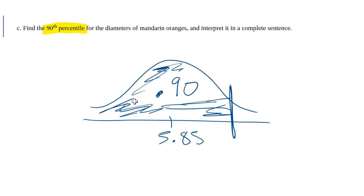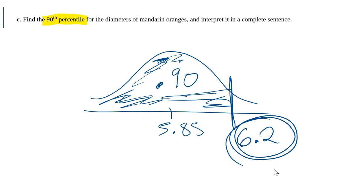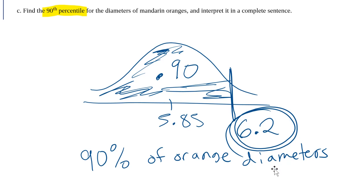The 90th percentile is 6.2. So what does that mean? That means that 90% of orange diameters at this farm are less than 6.2 centimeters.